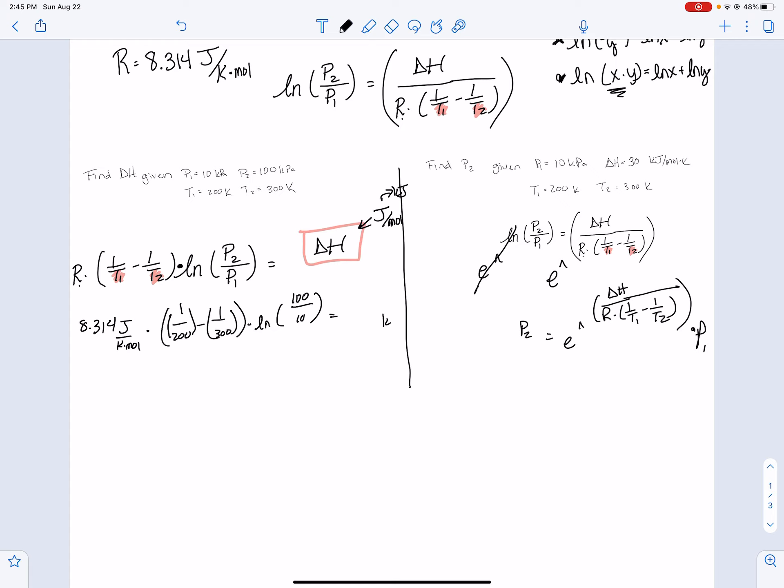And the units on this are going to turn out to be kilojoules. I'm sorry, it's going to turn out to be joules per mole. And then to get joules per mole into kilojoules, remember that there are 1 times 10 to the 3rd joules in 1 kilojoule. That's 1,000 joules in a kilojoule.